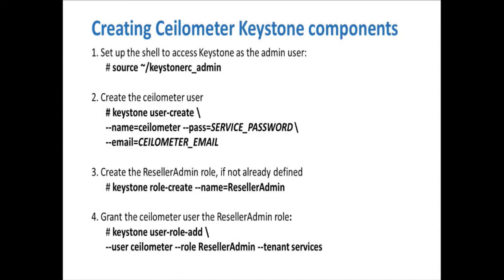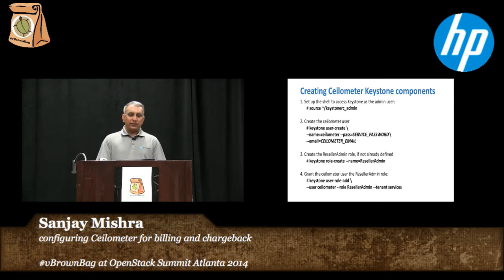Once the Selometer components are installed, there are a couple of steps that you have to complete to configure Selometer to work with Keystone. So there's having a Keystone user that has the appropriate configuration and then making the details of that user available to the Selometer services. In our example, we're creating a user named Selometer with an appropriate password and an email address as appropriate to your environment. And then there are a couple of roles that need to be added to that user — the reseller admin role and also the admin role, which is on the next slide.